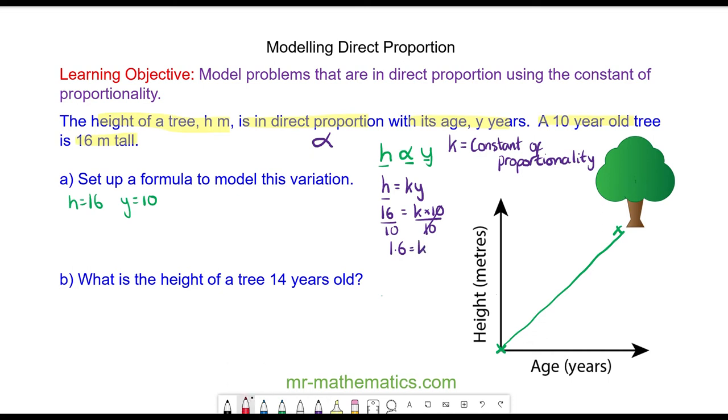The tens will cancel, so we're left with k equals 1.6. This means that the height is found by multiplying the number of years old by 1.6. So this is the model for the variation.